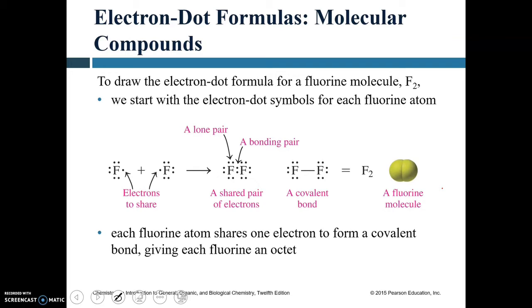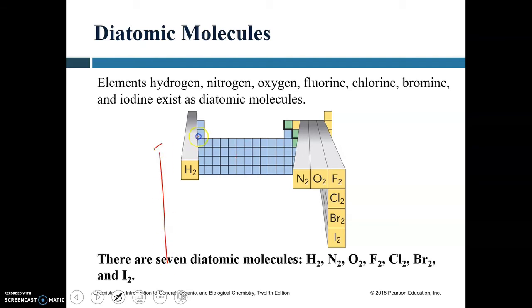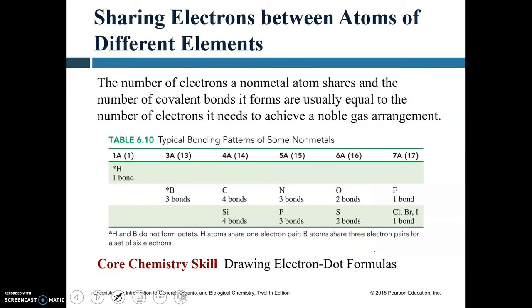To show how electrons are shared, we use electron dot formulas — Lewis structures. Drawing the Lewis structure for fluorine: each fluorine atom has three lone pairs and one unpaired electron. The single unpaired electrons on each atom are shared, forming one bonding pair — a single bond between two fluorine atoms. Each atom in the F₂ molecule has an octet. These elements exist as diatomic molecules. Generally, the number of electrons a non-metal shares equals the number of covalent bonds it forms.